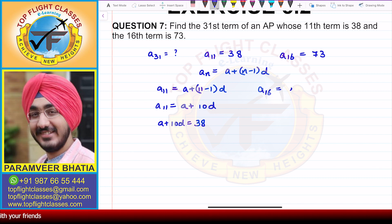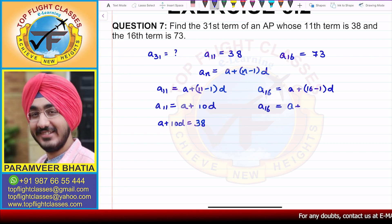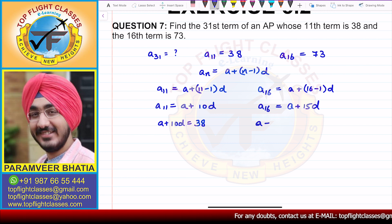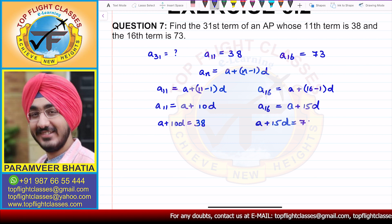And if we work out the 16th term, we get A plus (16 minus 1) D, so A16 equals A plus 15D. Therefore, we can write Equation 2: A plus 15D equals 73.